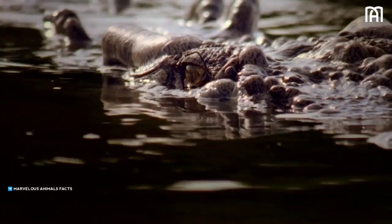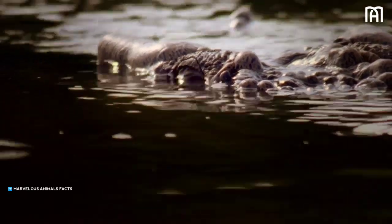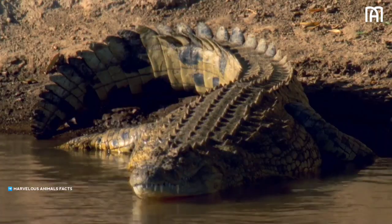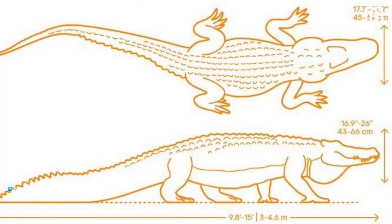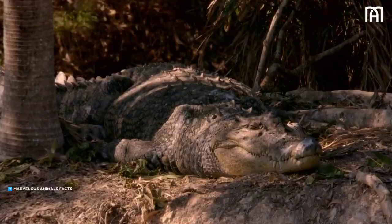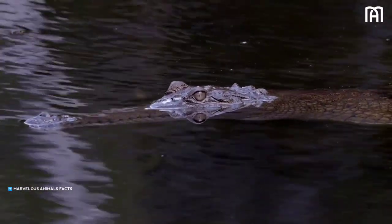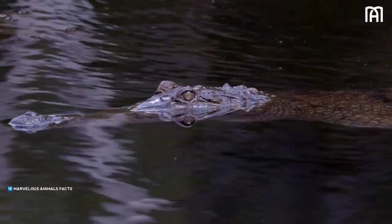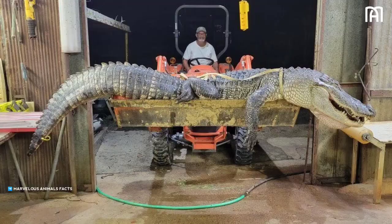An average adult American alligator's weight and length is 360 kilograms or 790 pounds and 4 meters or 13 feet, but they sometimes grow to 4.4 meters or 14 feet long and weigh over 450 kilograms or 990 pounds. The largest ever recorded, found in Louisiana, measured 5.84 meters or 19.2 feet.